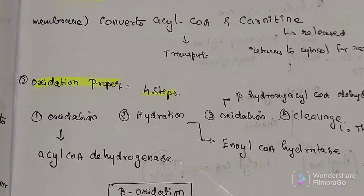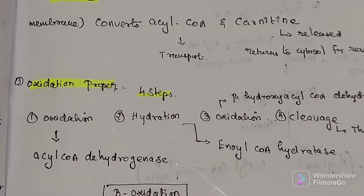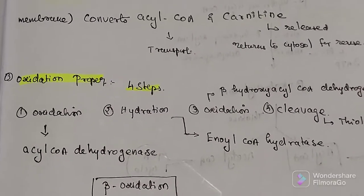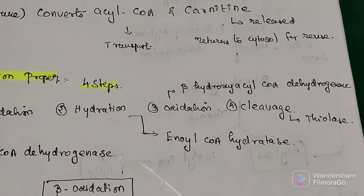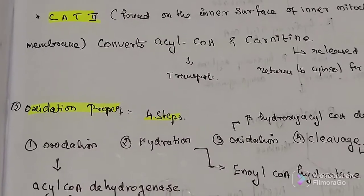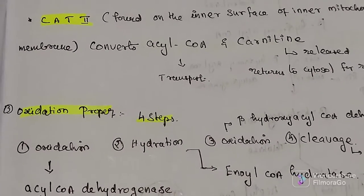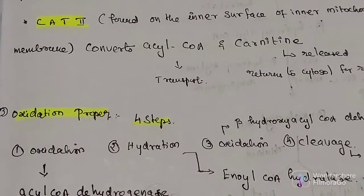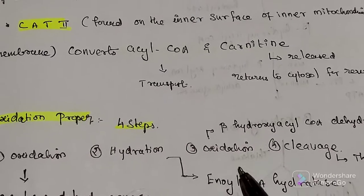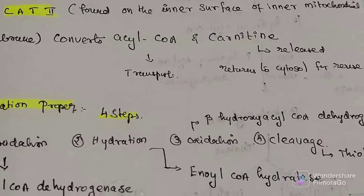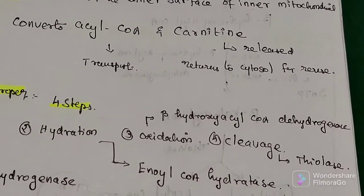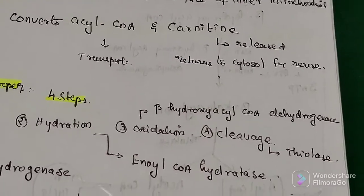Step 3 is beta oxidation proper in the mitochondrial matrix, which includes four steps: first, oxidation; second, hydration; third, oxidation; and fourth, cleavage. The first oxidation is catalyzed by acyl-CoA dehydrogenase. Hydration is carried out by enoyl-CoA hydratase. The second oxidation uses beta-hydroxyacyl-CoA dehydrogenase. Cleavage is performed by thiolase.